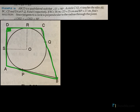A circle with center O touches the sides AB, BC, CD, and AD at P, Q, R, and S respectively. So here is a circle and you can see it touches the sides here at P, here at Q, at R, and at S.